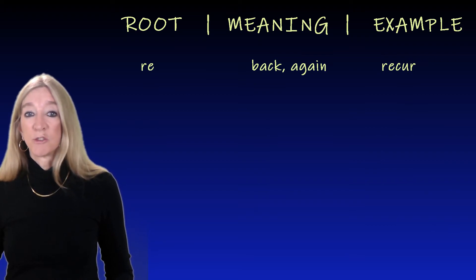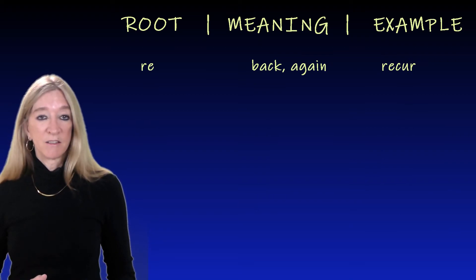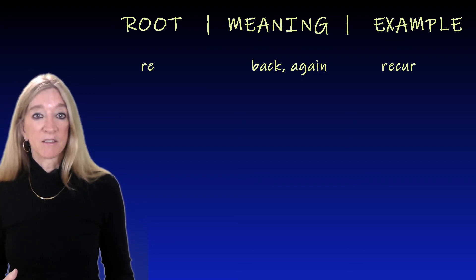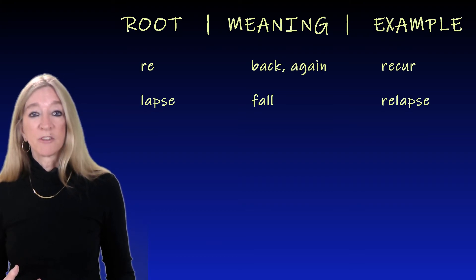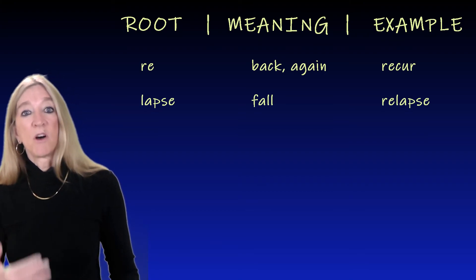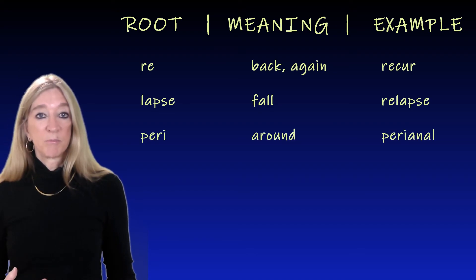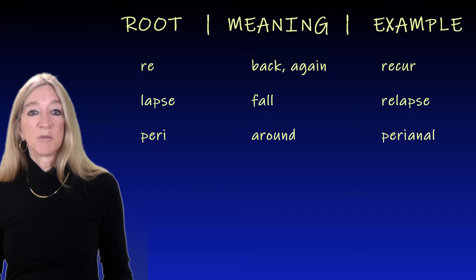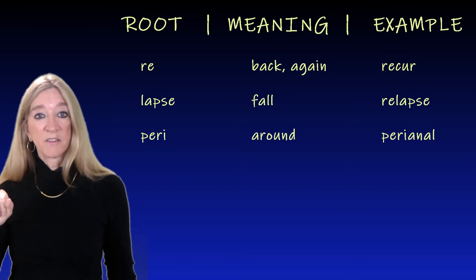The next root, 're,' meaning back or again. When a disease recurs, it comes back. And the next root, 'lapse,' meaning to fall — a relapse is to fall back into a state of disease. 'Peri' means around. An example is perianal, the area around the anus.